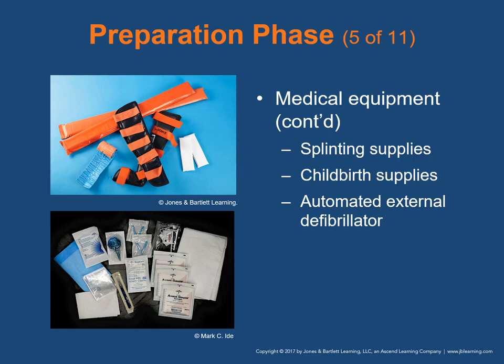Splinting supplies include adult and child-size traction splints, arm and leg splints such as inflatable, vacuum, cardboard, plastic, foam, wire ladder, or padded board. You also need triangular and roller bandages, a short backboard, a long backboard, head immobilization devices, and cervical collars in adjustable or a variety of sizes. Childbirth supplies should include at least one sterile emergency obstetrics kit with surgical scissors, hemostats, cord clamps, umbilical tape, small rubber bulb syringe, towels, gauze sponges, sterile gloves, plastic wrap, sanitary napkins, plastic bag, baby stocking cap, and baby blanket. You also need an AED on board.